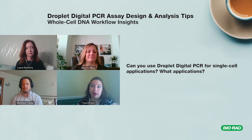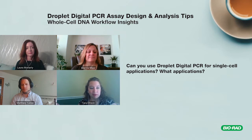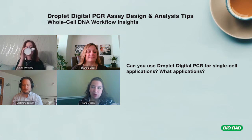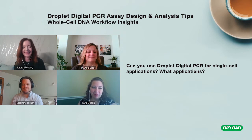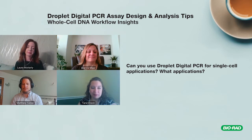You can get an actual percentage of your cells that have the target. There are other technologies — flow cytometry, for example — but those have downsides: you need a flow cytometer, someone who knows how to use it, and an antibody. With ddPCR you can sidestep all of those things.